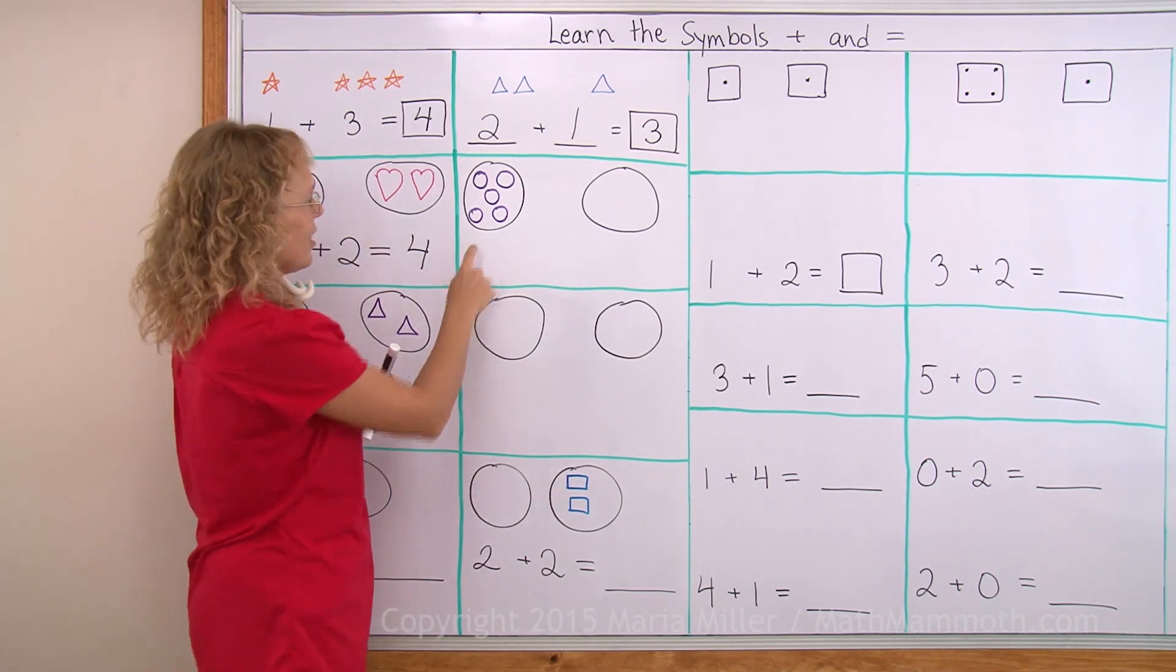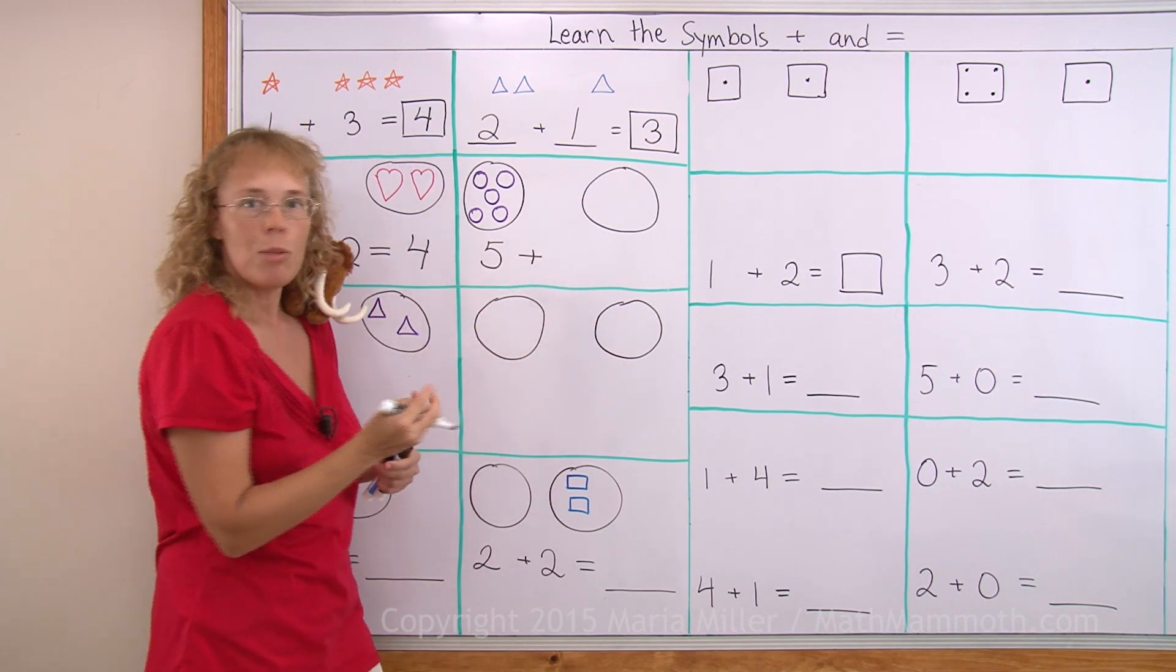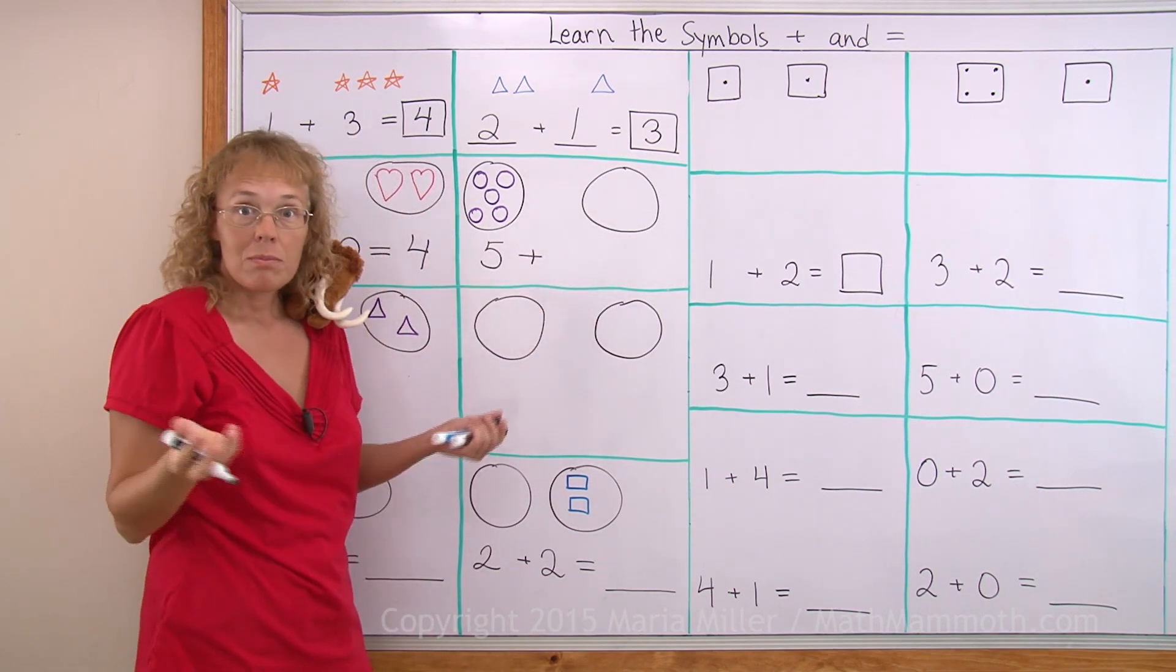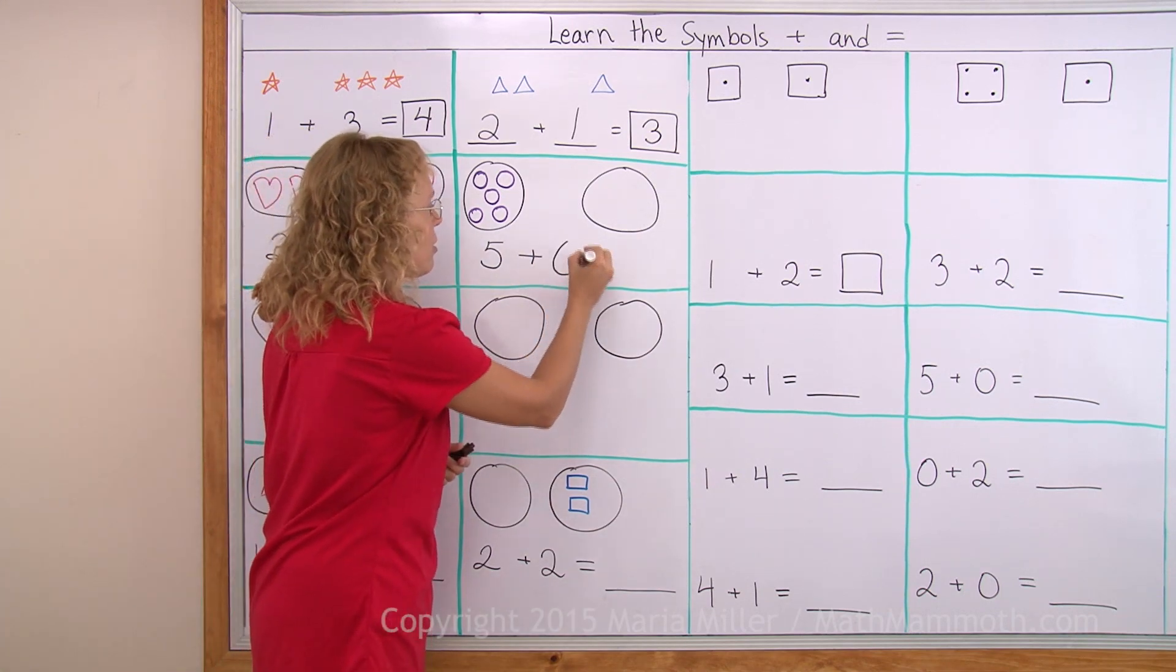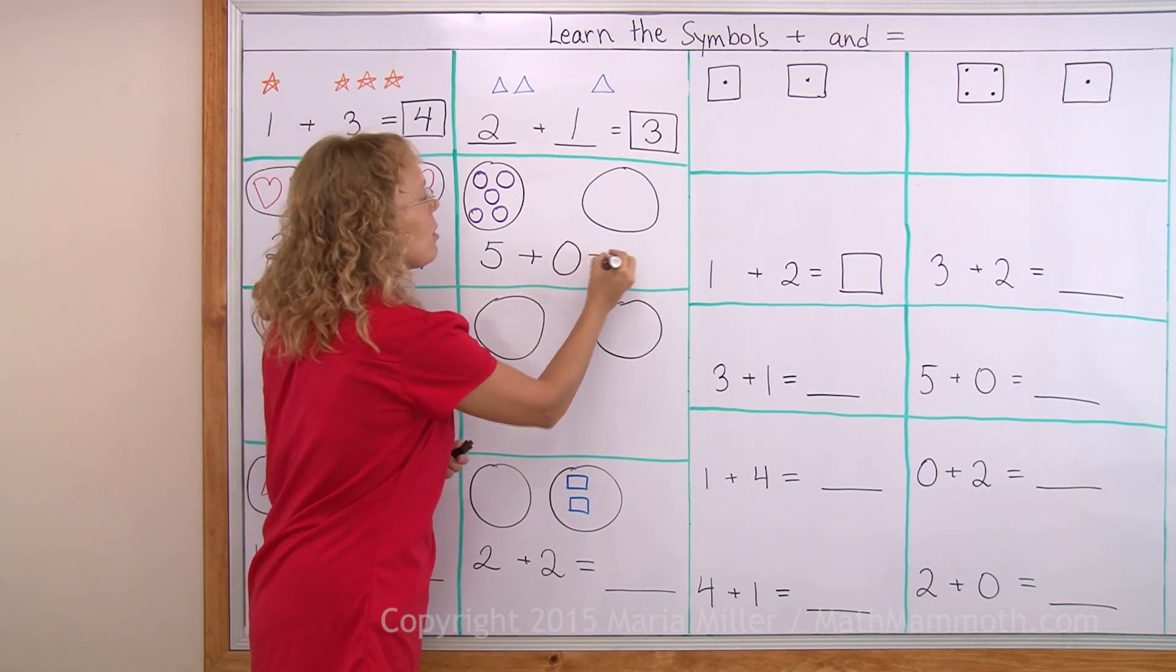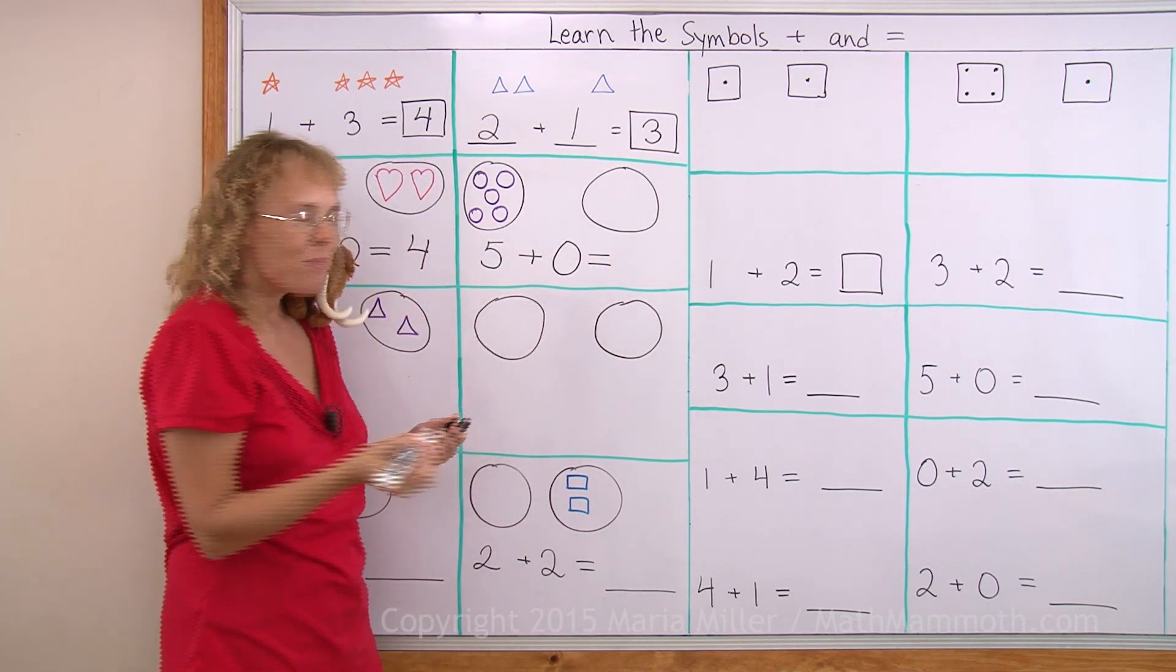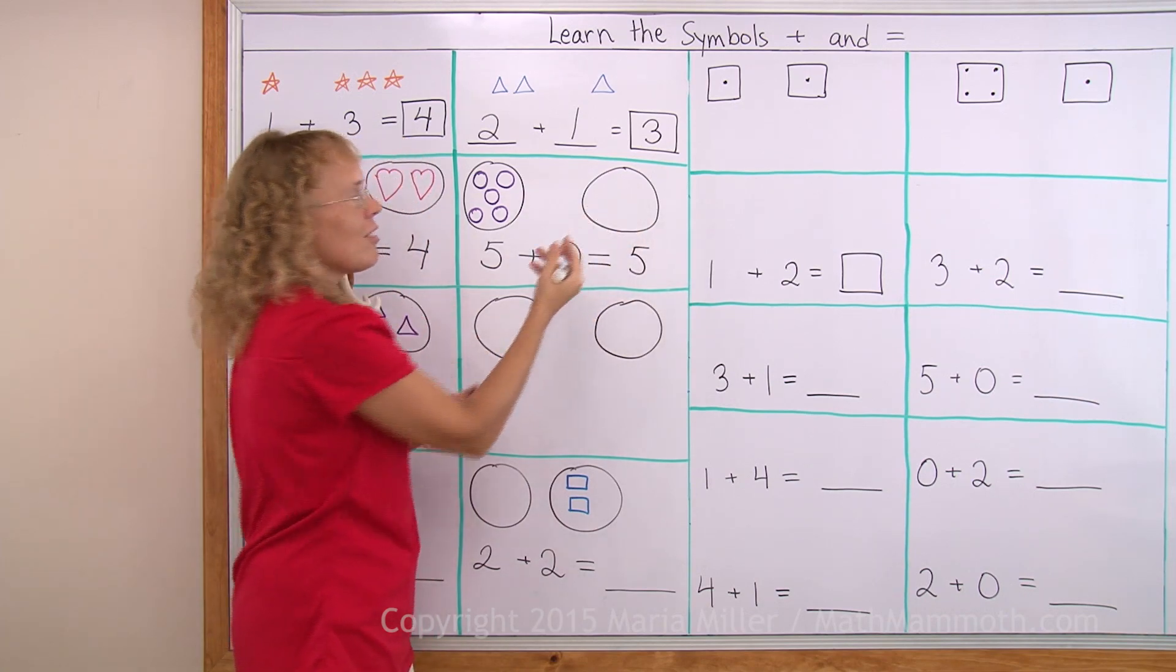Over here there's five, right? Then I write plus. I'm gonna add. But how many are in here? None. That means zero, right? You remember zero. So I'm adding five plus zero. Then equals how many in total? Well, total is just five because that doesn't give us any more.